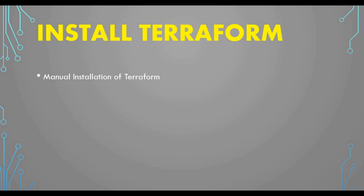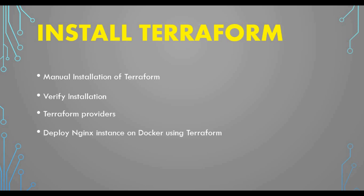In this tutorial, we are going to do an installation of Terraform. Since this is the second tutorial, we spoke about infrastructure as code, and now we want to set up Terraform first. We'll do a manual installation — there are different ways: manual binary file or using repositories. We'll verify the installation is successful, talk about Terraform providers, and see a sample deploying an Nginx instance on a Docker instance using the Terraform config file.